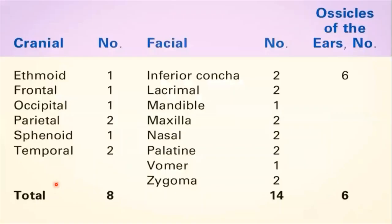The facial bones total 14 in most classifications: two inferior conchae, two lacrimal bones, one mandible, two maxillae, two nasal bones, two palatine bones, one vomer, and two zygomatic bones. The ear ossicles are separate — six in total, three on each side. Some include these with cranial bones making the count 28 or even 29.